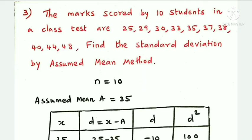Next question: the marks scored by 10 students in a class test are 25, 29, 30, 33, 35, 37, 38, 39. Find the standard deviation by the assumed mean method. The number of data n is 10.